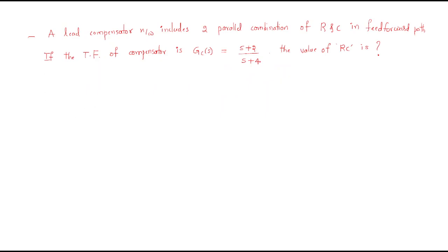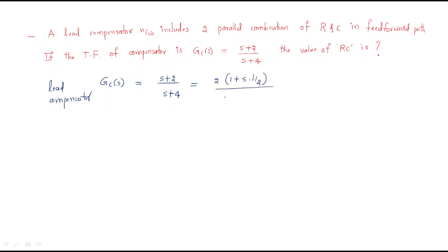The next problem: a lead compensator network includes two parallel combinations of RC in the feed-forward path. The transfer function is gc(s) = (s+2)/(s+4). We need to find the RC values. Converting to lead compensator form by factoring: common the 2 to get (1 + s×(1/2)) / (1 + s×(1/4)).